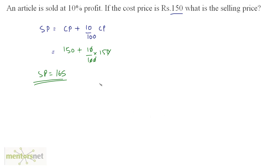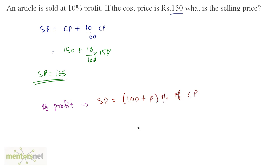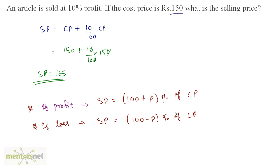There is also a derived formula for this. If you have profit, then selling price is equal to (100 plus the profit percentage) divided by 100, times the cost price. If you have loss, then the selling price is equal to (100 minus the loss percentage) divided by 100, times the cost price. These formulas are derived from the same concept: selling price equals cost price increased by its percentage in case of profit, and decreased by its percentage in case of loss.